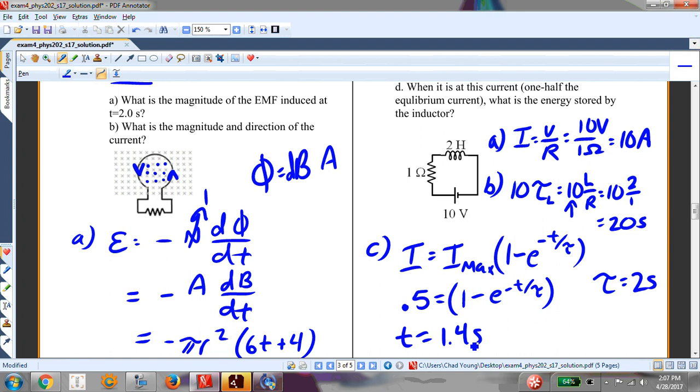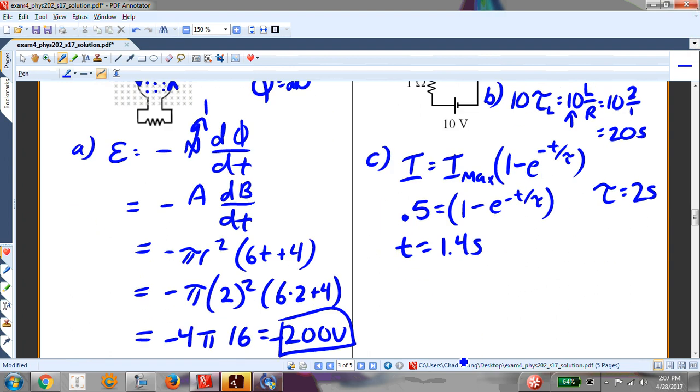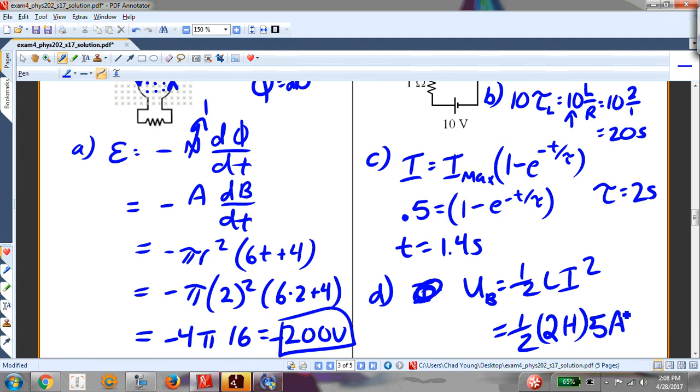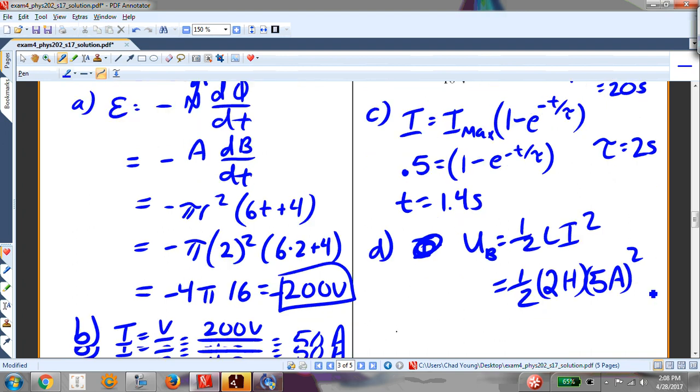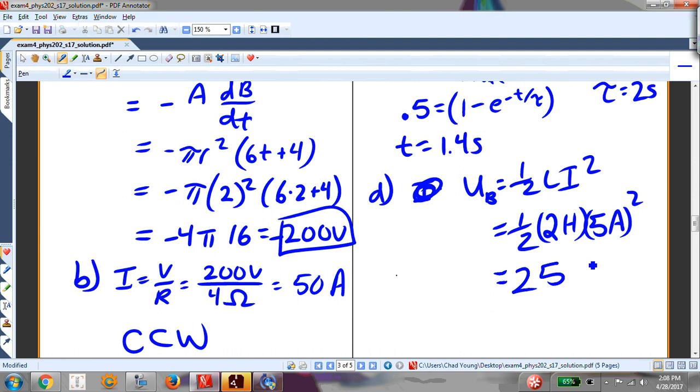And then, when it's at this current, what is the energy stored by the inductor? We've seen this already, but the energy, U, by the inductor in the magnetic field is one-half Li squared. That's going to be one-half of the inductance, which is 2 Henrys, times 5 amps squared is 25 joules.